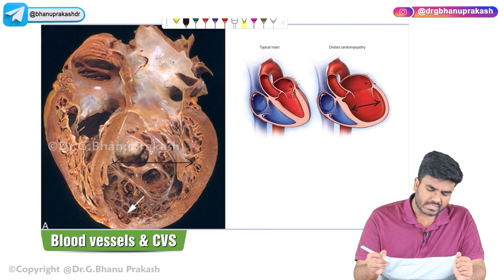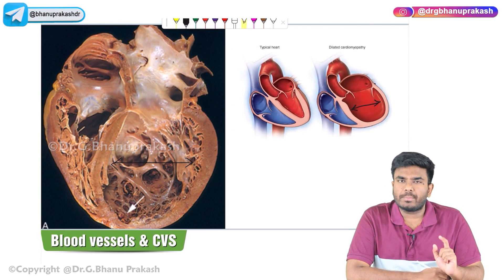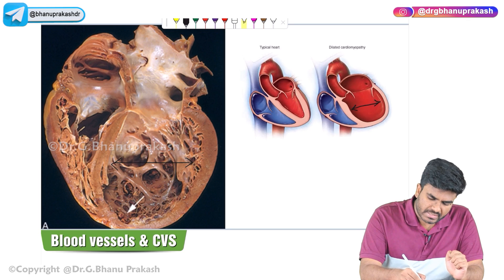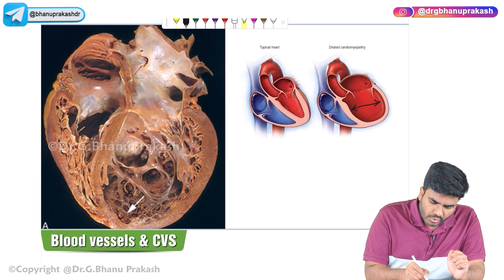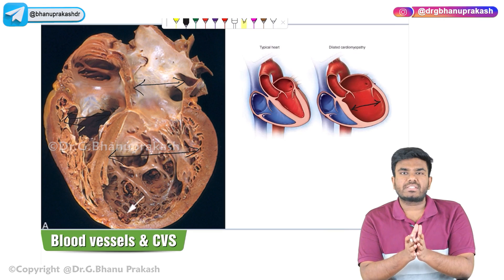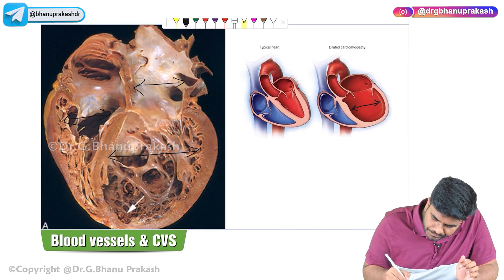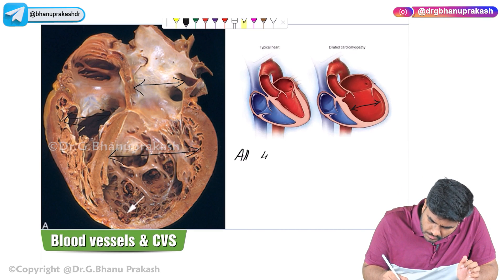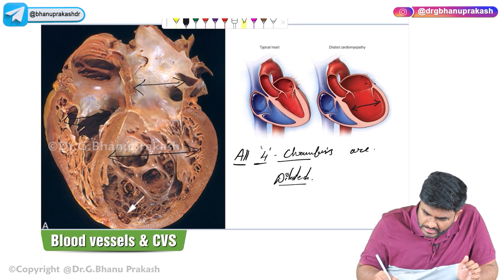Welcome back. In this video, let's discuss dilated cardiomyopathy. We have already discussed hypertrophic cardiomyopathy in the previous video. What you can see here is that all four chambers of the heart are pathologically dilated — that is why it is called dilated cardiomyopathy.